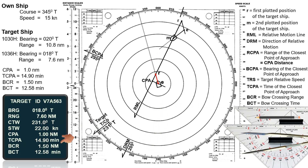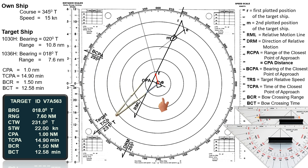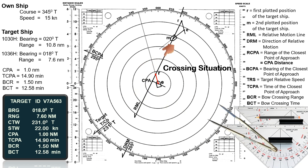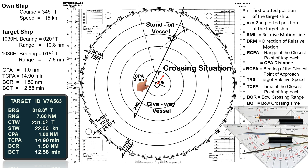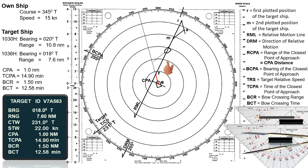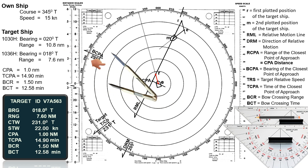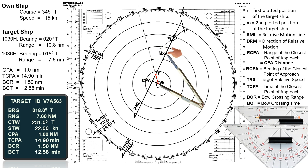We have now calculated all the vital information needed. Assuming we are in open water and the company policy for safe passing distance is two nautical miles, we are in a crossing situation. Applying the rules of the road, the target ship is the stand-on vessel and own ship is the give-way vessel, so it is our responsibility to alter course. We will alter course when the target is at a distance of five nautical miles — measure five miles on the 12-mile range scale and lay the compass divider from the center of the radar plotting sheet towards the RML. Mark this point as Mx, the point of execution.